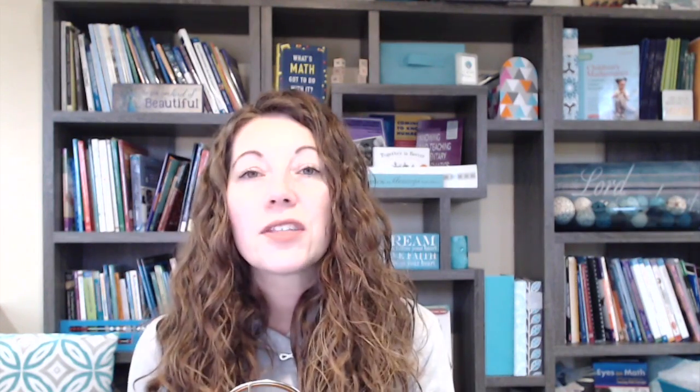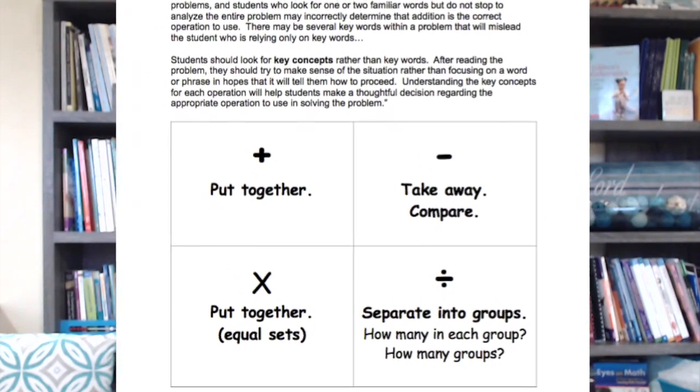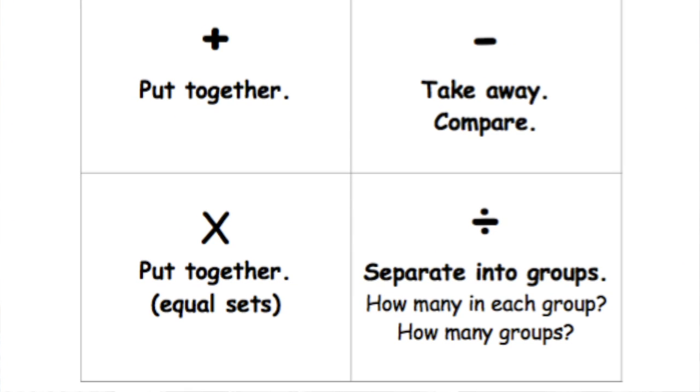We want to help kids be able to use a keyword to figure out what operation to do. But instead, we should be using the big idea — or what I love is Susan O'Connell's idea of key concepts. This is a chart that she mentions in her book, An Introduction to Problem Solving, and I love this idea.